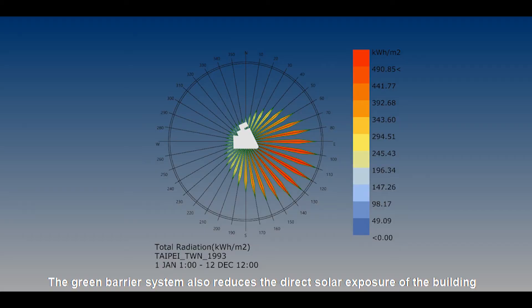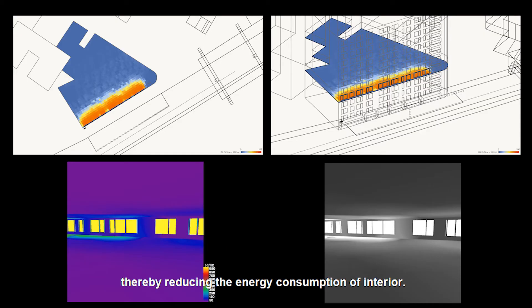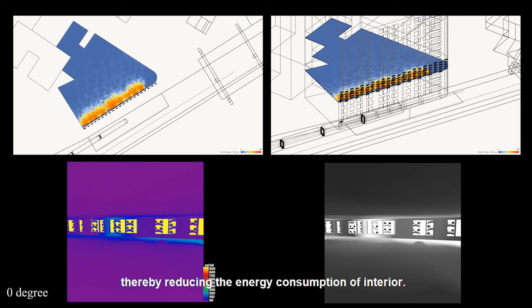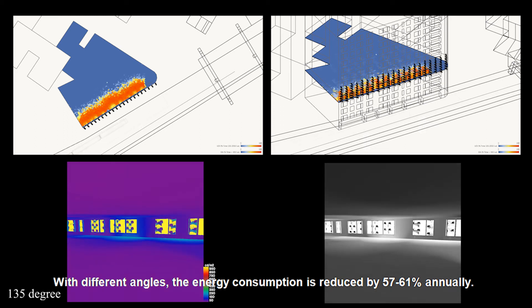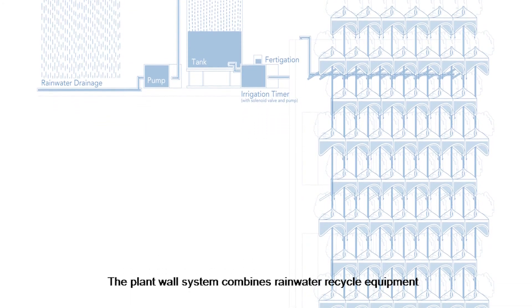The Green Barrier system also reduces the direct solar exposure of the building, thereby reducing the energy consumption of the interior. With different angles, the energy consumption is reduced by 57% to 61% annually.